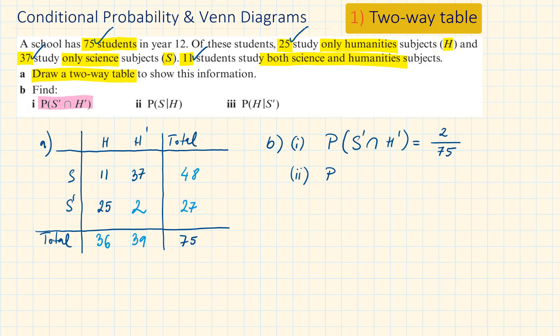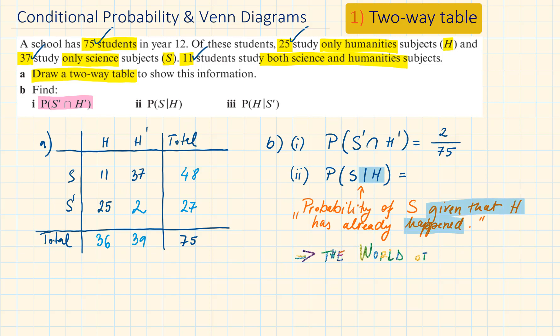Next, what is the probability of S given that H has already happened? The vertical line represents given that something has happened. So it will be out of 36 because that is the total of H. And the probability of S given H has happened, so given that a student is studying humanities, how many of these students also study science? There are 11 of them, so the probability will be 11 out of 36.